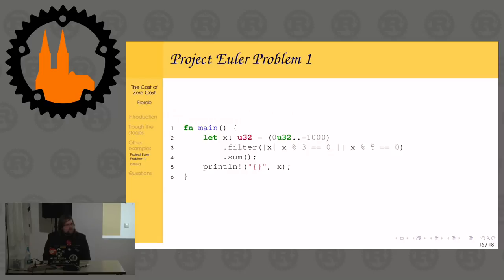The obvious question: that calls a lot of functions and iterators. Is that actually as efficient as the imperative version? Or is it just a bunch of overhead you wouldn't want in performance-critical code?